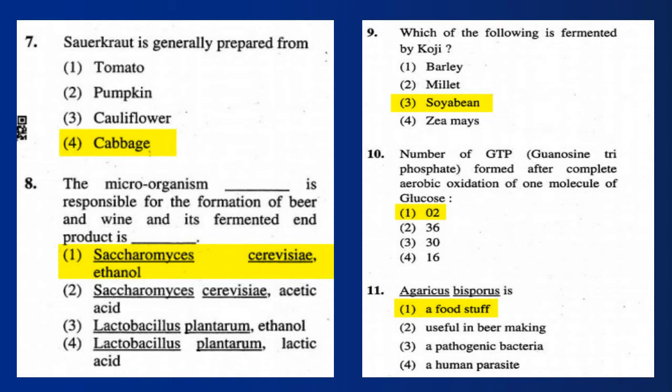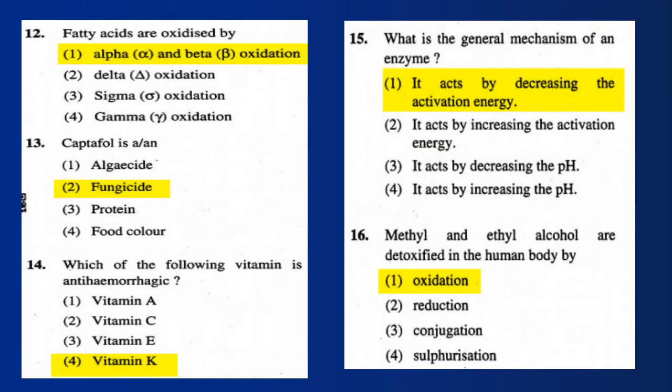Question 12: Fatty acids are oxidized by alpha and beta oxidation. Question 13: Captafol is a fungicide. Question 14: Which of the following vitamins is the anti-hemorrhagic vitamin? Answer: Vitamin K. Question 15: What is the general mechanism of an enzyme?